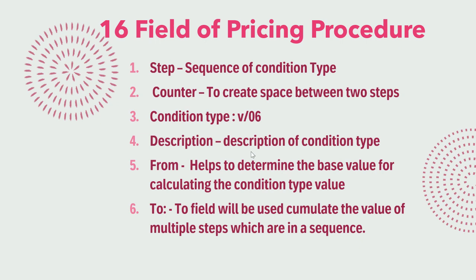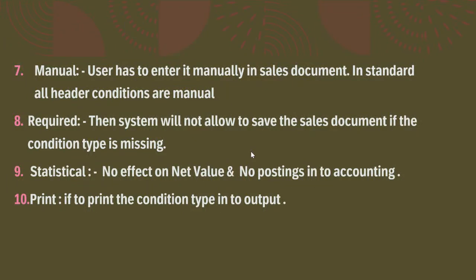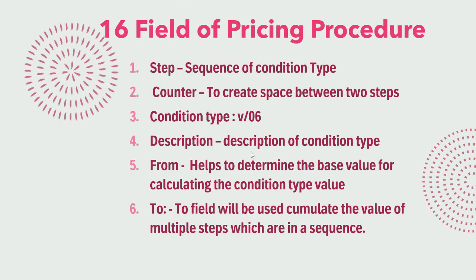The second field is the Counter. It is mostly the same as Step — if we have consumed a lot of step counts, we can create some space between two steps using the counter. The third field is the Condition Type. In transaction VK11/B06, we define the condition types and arrange them into the pricing procedure.